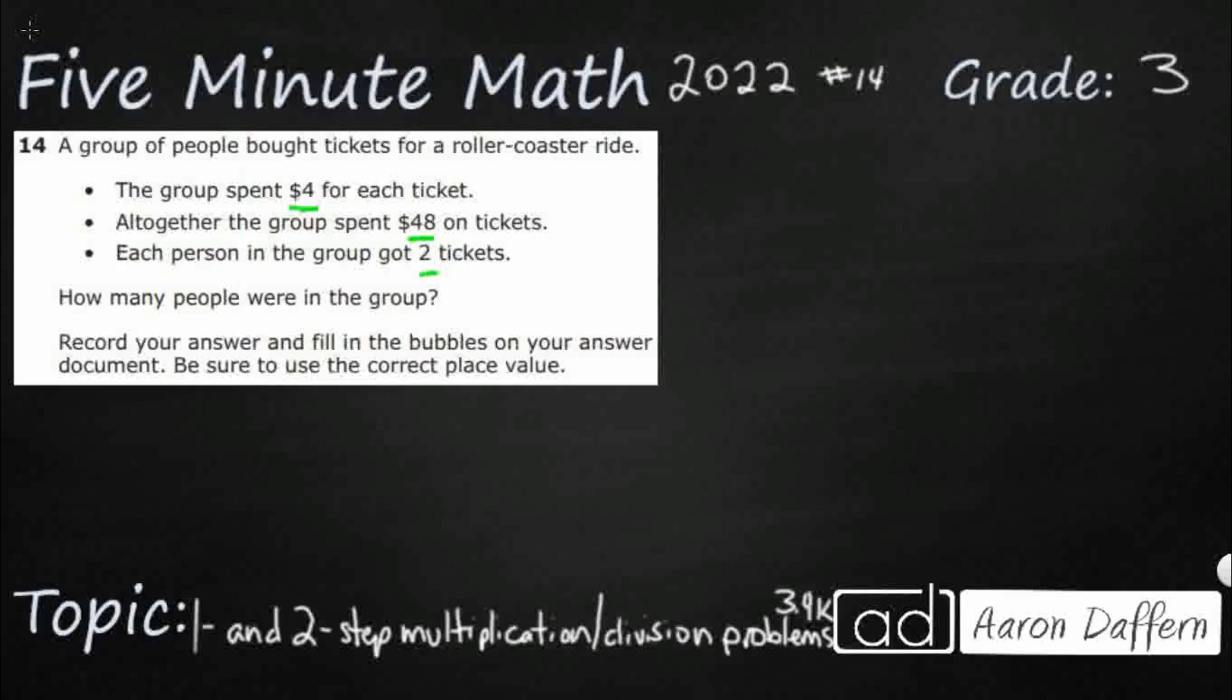Well, first let's figure out how many tickets there are. Okay, so look at these two that have to deal with money. So the total is, I'm going to draw a strip diagram here to represent this. Altogether the group spent $48 on tickets. So this altogether right here gives me my total.